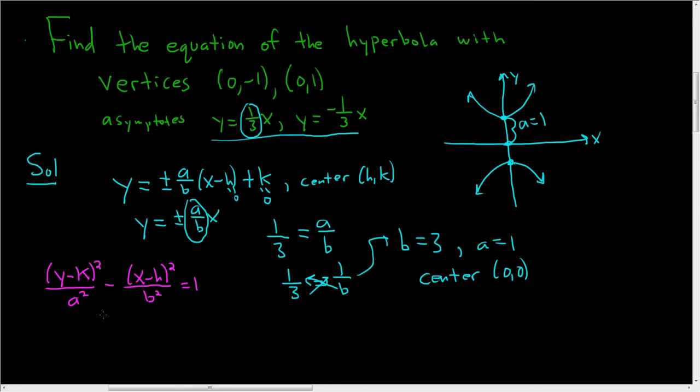In this case, h and k are both 0, so we get y squared. a squared was 1, so y squared over 1, minus h was 0, so x squared.